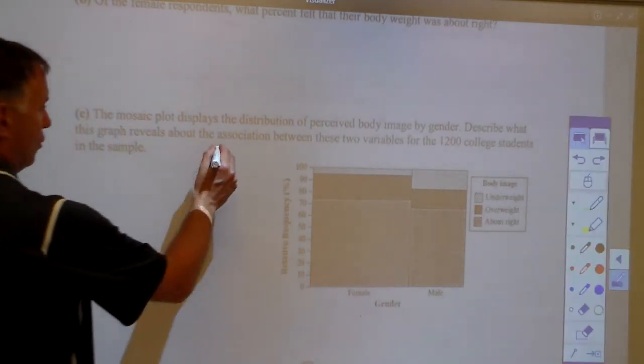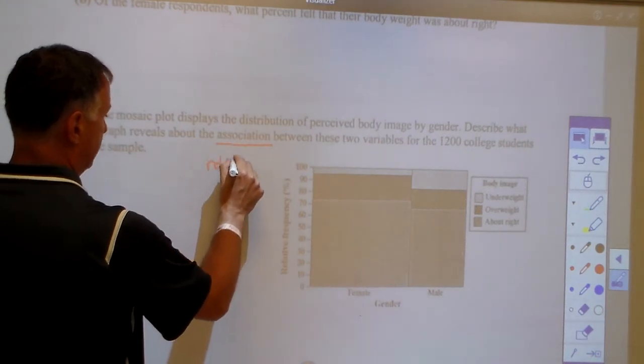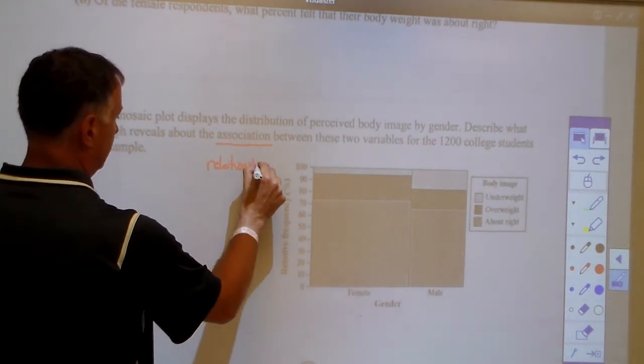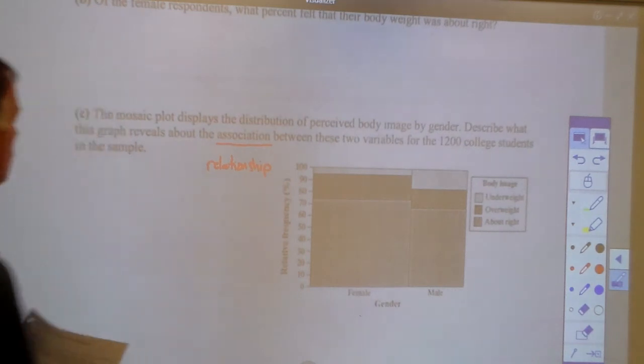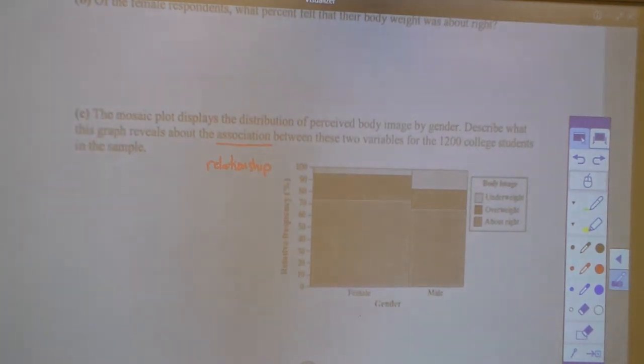Describe what this graph reveals about the association. Association, another word for association is like the relationship. So what does the graph say about the relationship between these two variables? Okay. And so what do we say? Let's look...